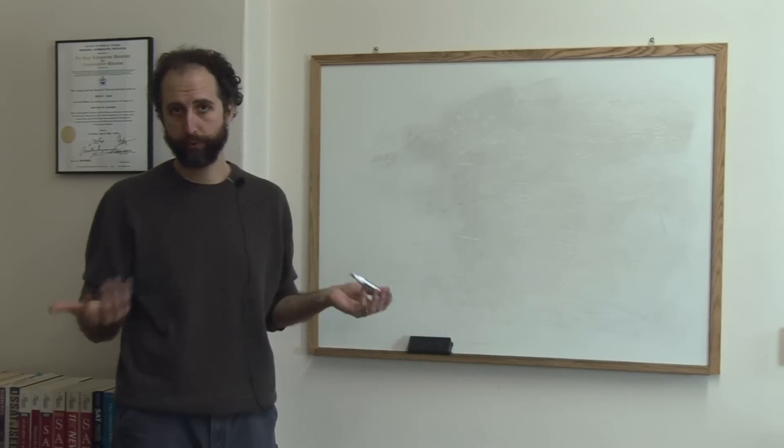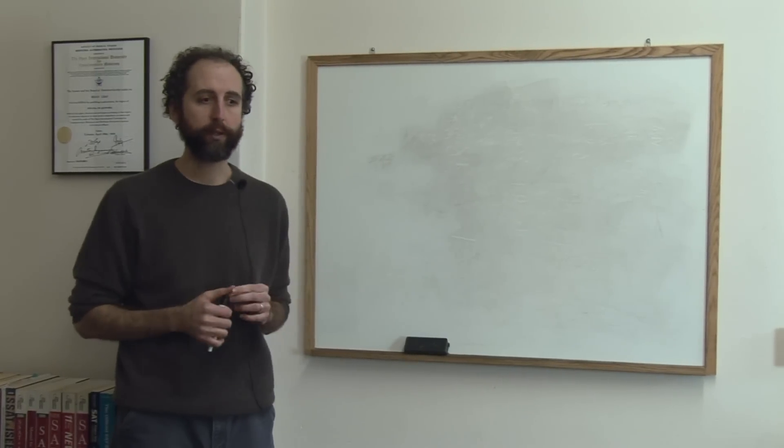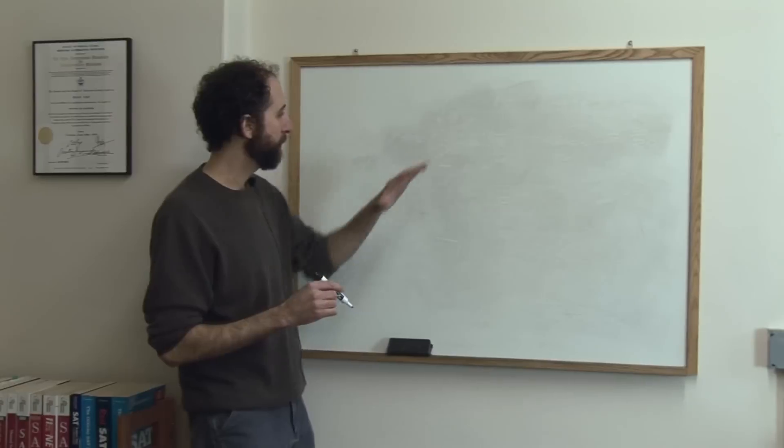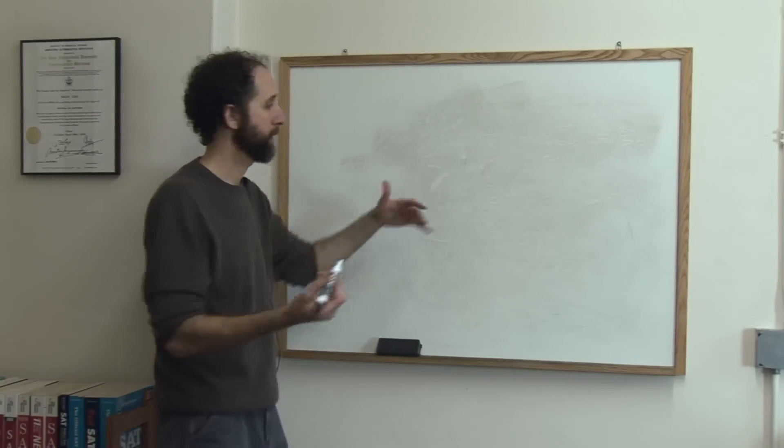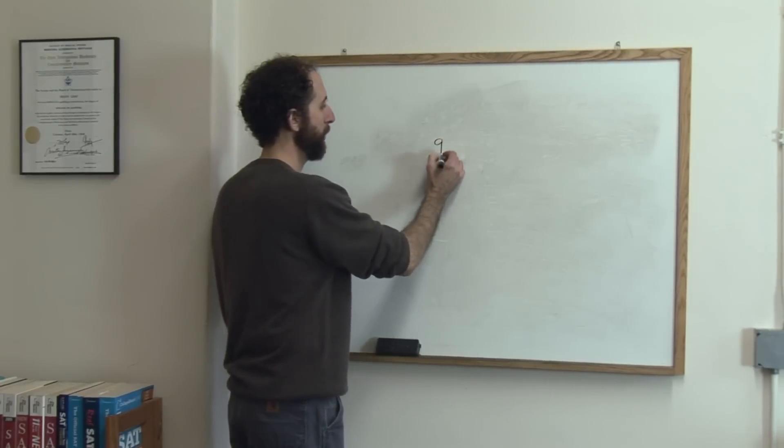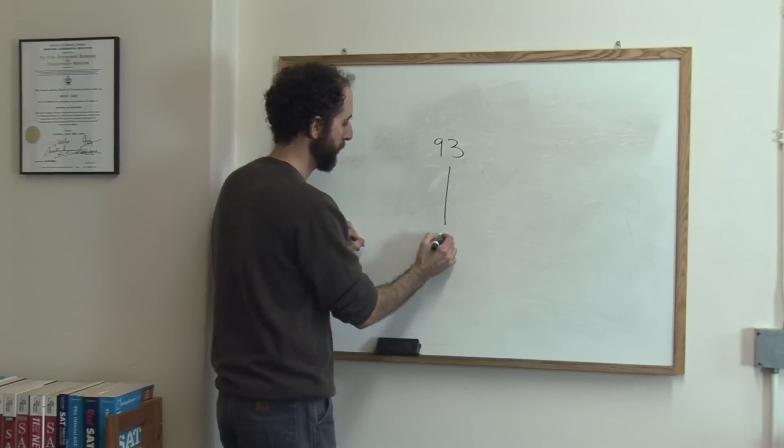There are two ways you can grade on a curve, generally speaking. The first way, the simpler way, is if you have a list of grades of the students in your class. Let's say the highest grade is a 93 and the lowest grade is a 62.